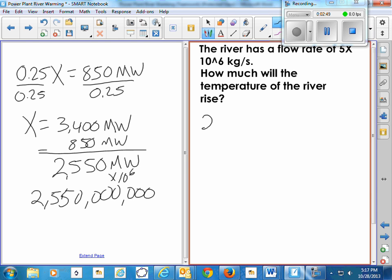We have 2.55 times 10 to the ninth joules per second, and we have 5 times 10 to the sixth kilograms per second. Per second cancel, so we have joules per kilogram.